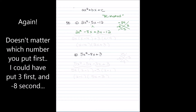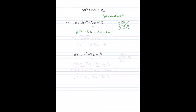Now notice I have four terms — 1, 2, 3, 4 — and that takes us back to factoring by grouping. I look at the first two terms and pull out a common factor of 2x, leaving (x minus 4). Then I look at the next two terms and pull out 3, leaving (x minus 4) again. That common factor I bring to the front and I'm left with (2x + 3). That is complete.